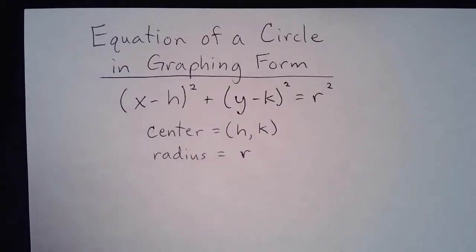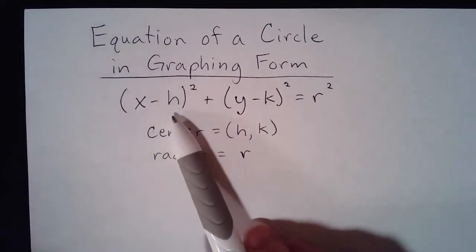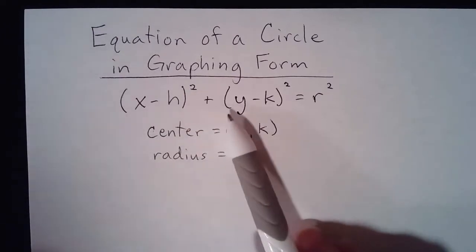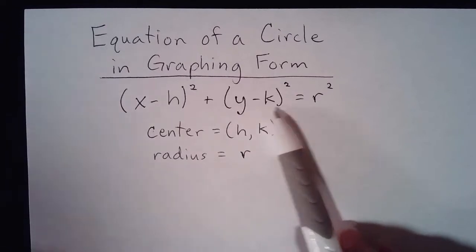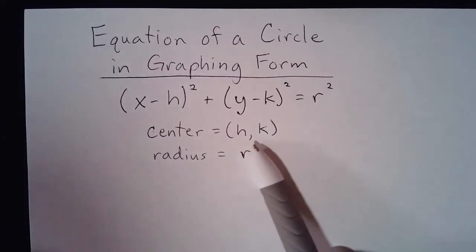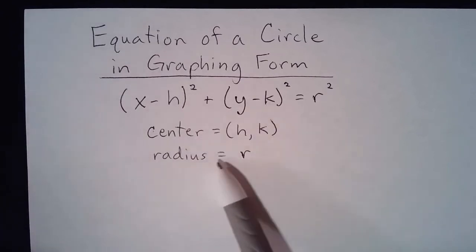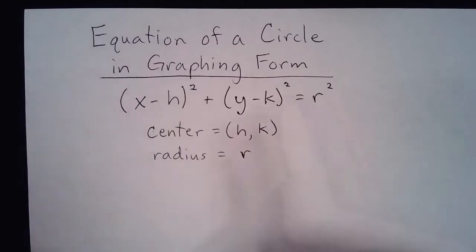Alright, so the equation of the circle in graphing form, we're just going to kind of review this because this is what we've talked about before. You have the quantity of x minus h squared plus the quantity of y minus k squared equals r squared, where the center of the circle is given by the point (h,k) coming from these two values, and then the radius is r, the square root of that number.